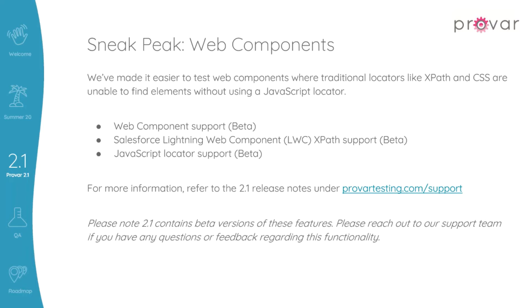Previously, the primary challenge was targeting web components using XPath that were nested within the Shadow DOM. You can think of the Shadow DOM as a hidden scoped subtree inside of a web page. This library will allow ProVar tests to more reliably locate and interact with web components and Lightning Web Components that reside within this Shadow DOM.